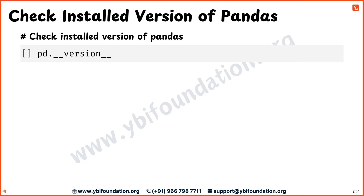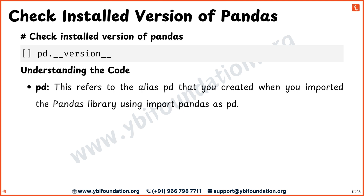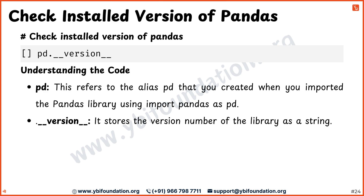Now, look at how to check the installed version of the pandas library. First, pd refers to the alias you created when you imported the pandas library using import pandas as pd. It's a shorter way to refer to the pandas library throughout your code. Next, .__version__ — by using this, you can quickly check which version of pandas is installed in your environment.